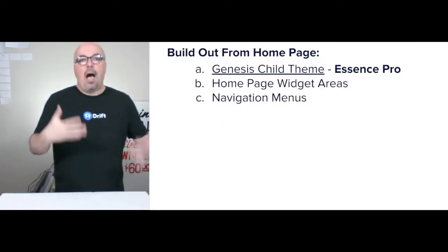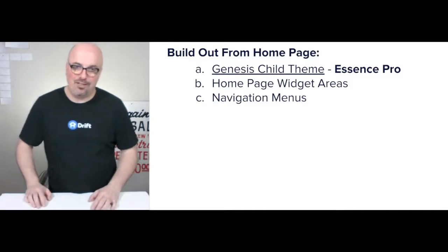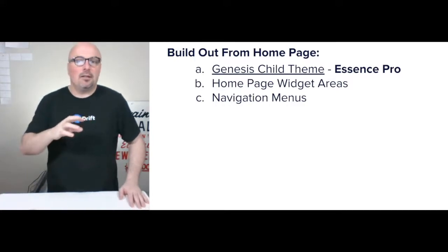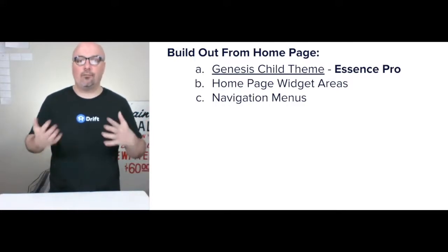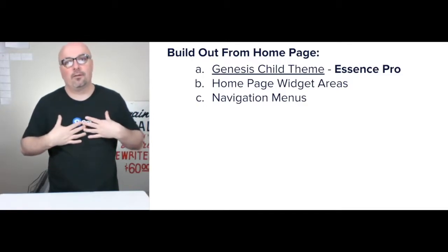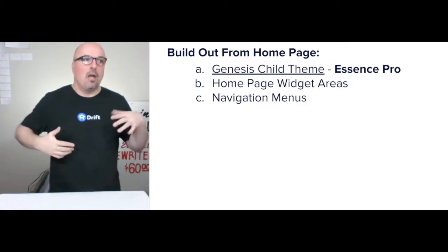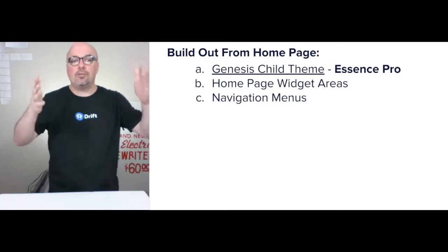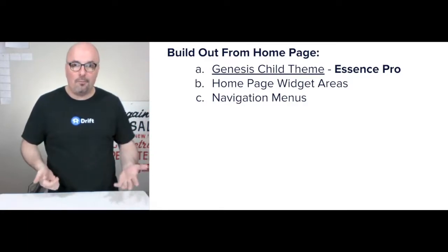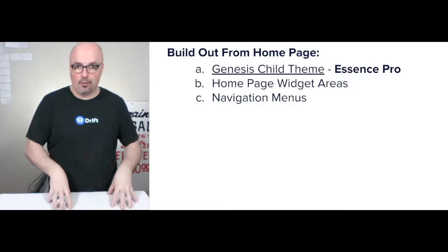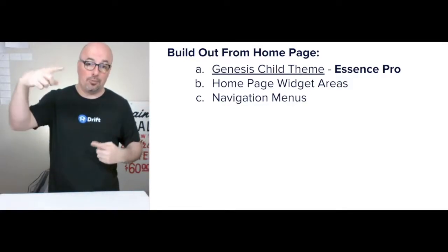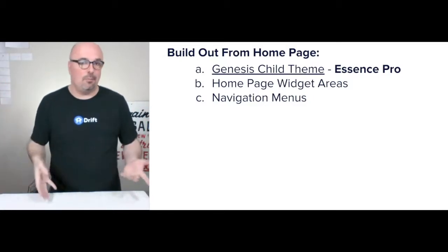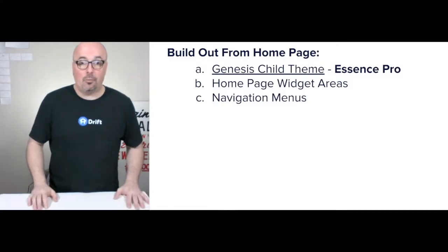I like to build out from the homepage. I use Essence Pro by Genesis — it's a Genesis child theme from studiopress.com. I taught myself to build websites for brands from the homepage, and with Essence Pro I'm using a couple of widget areas to populate the primary message. I also put navigation menus top and bottom, and once those pages are populated, you have a website up and running.